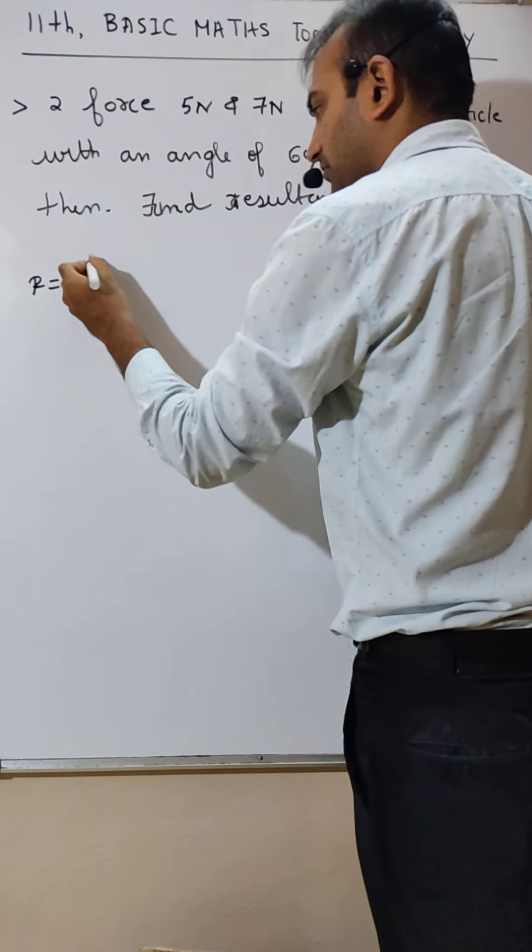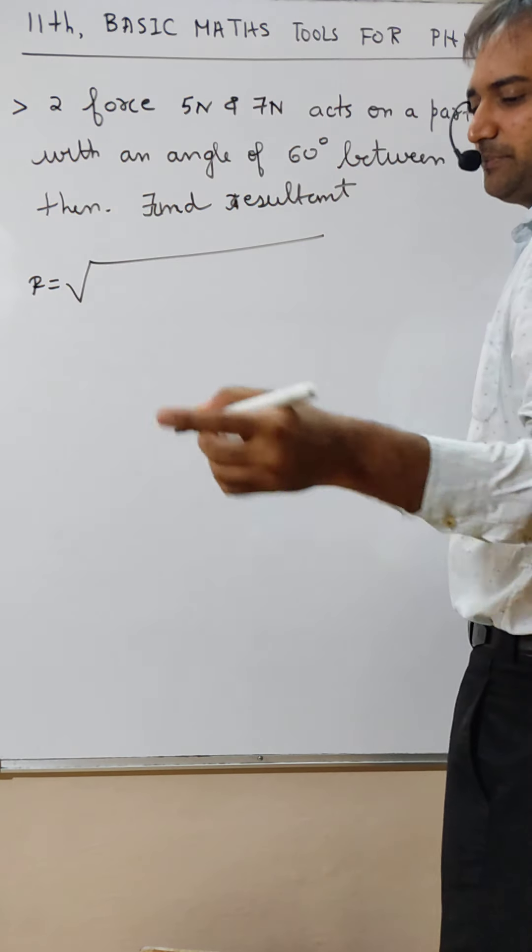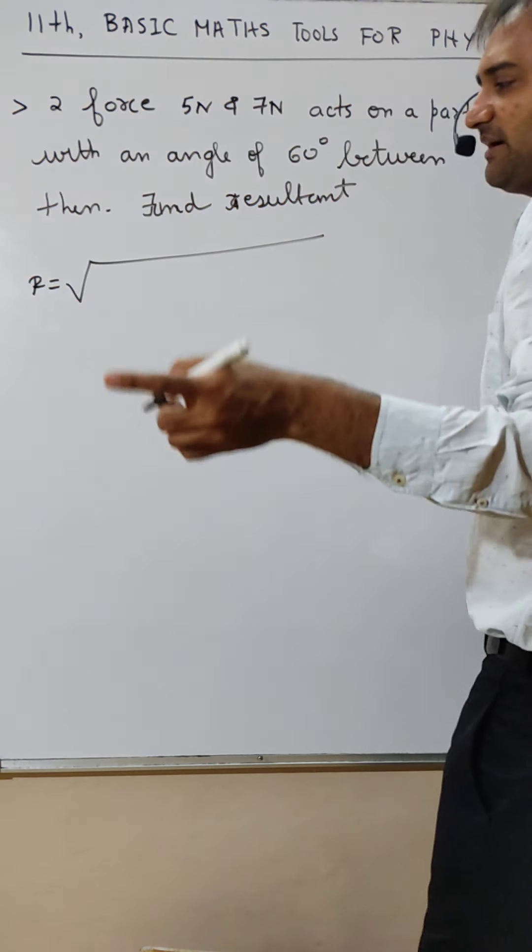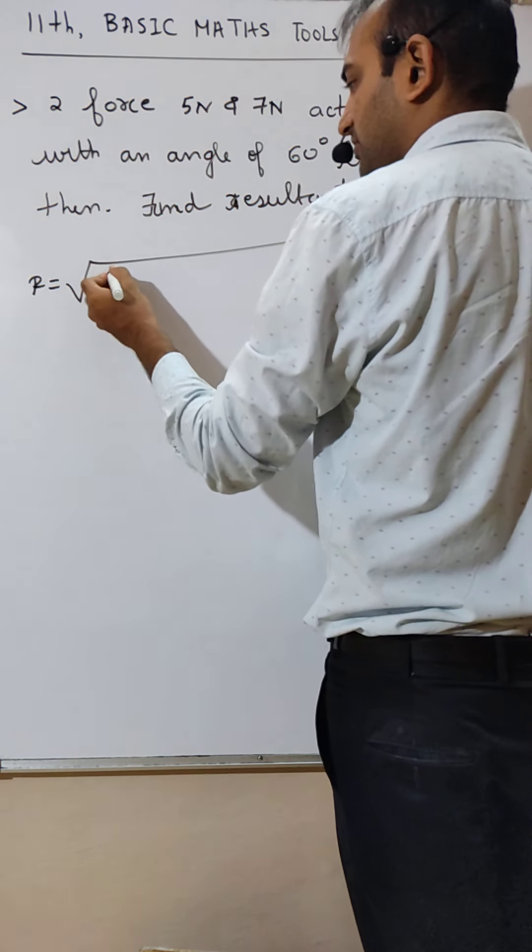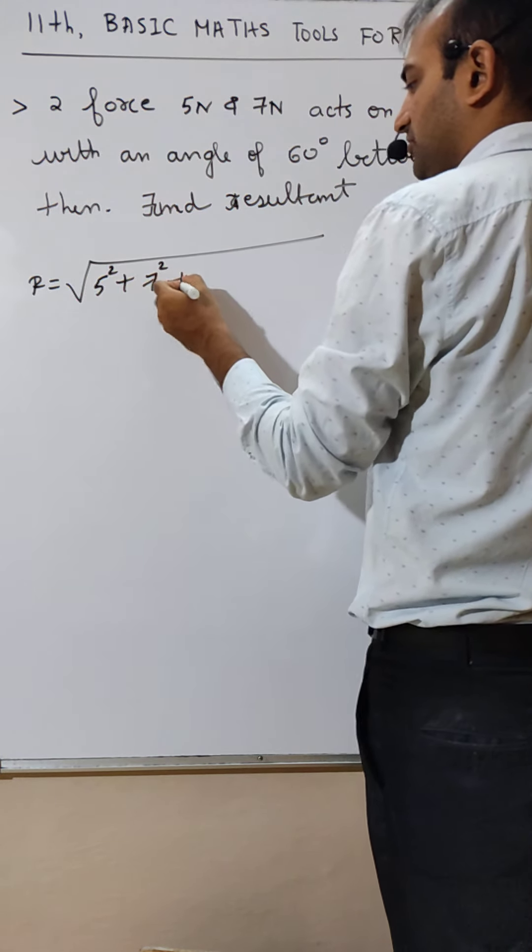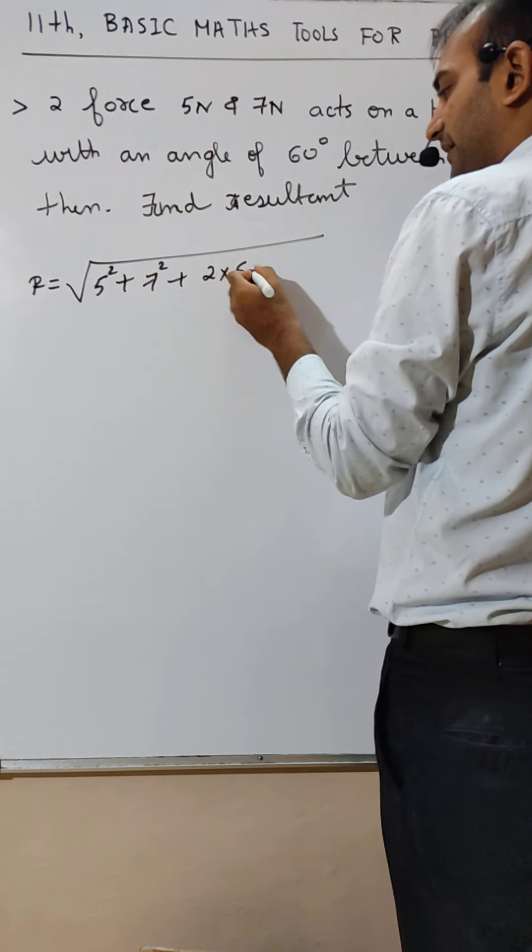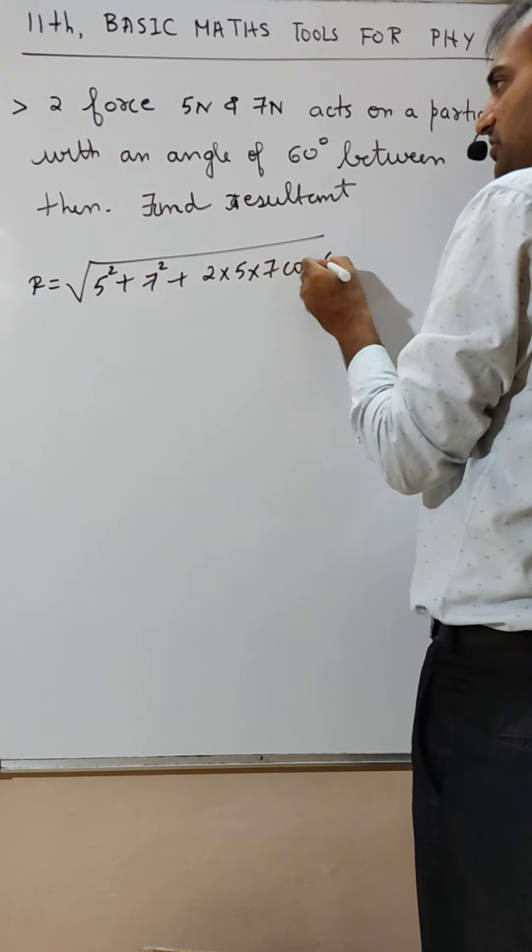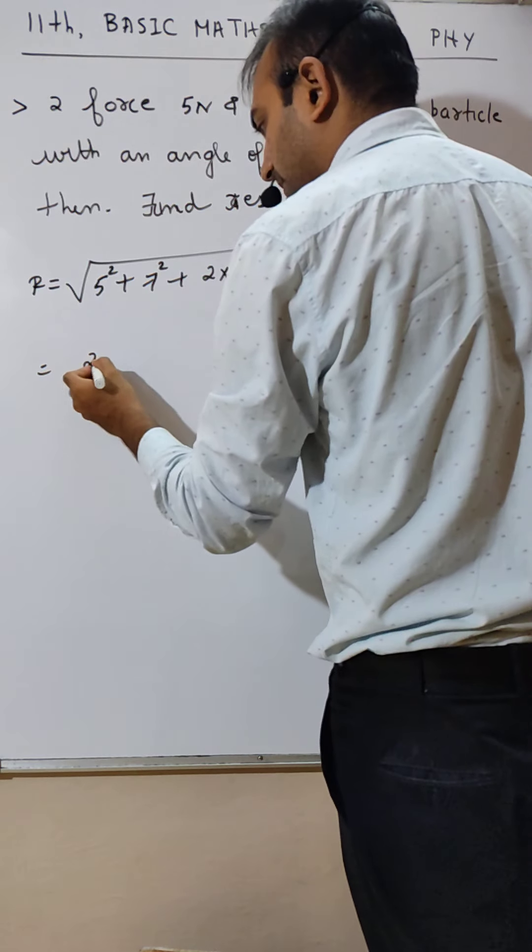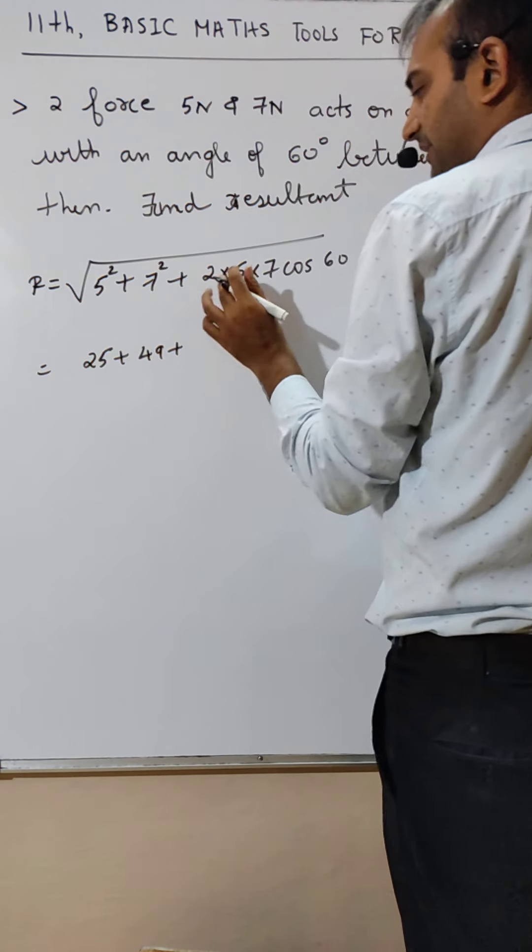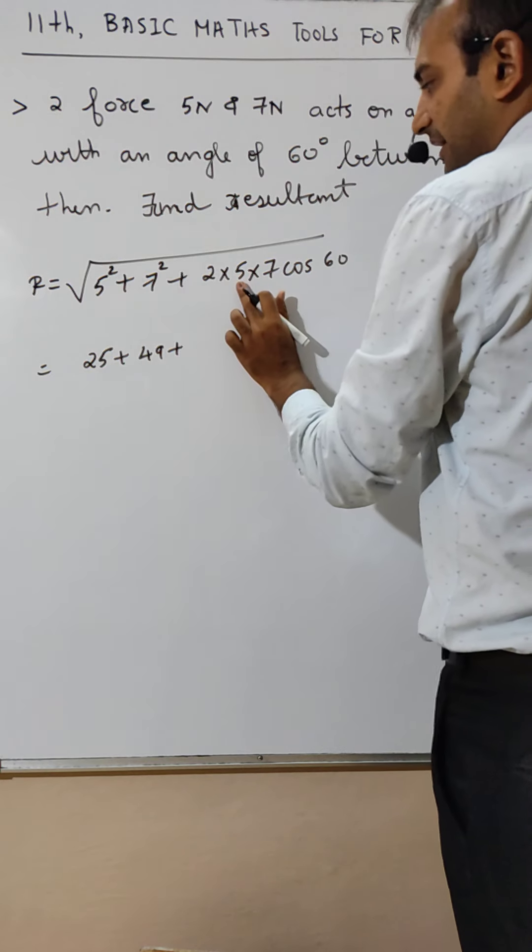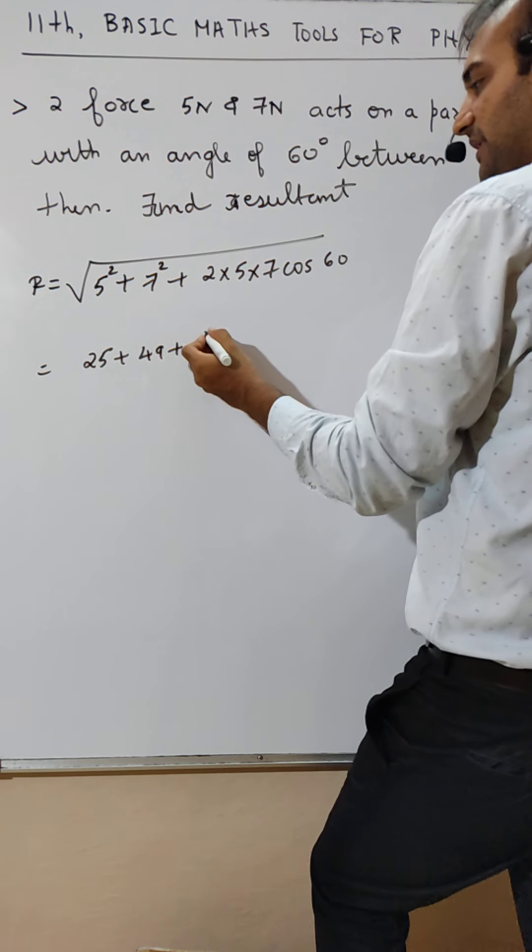Root 109 ka value bhi bol dena, bina calculator ke. Nearby value bata dena. 5 ka square, 7 ka square, plus 2 into 5 into 7 into cos 60.